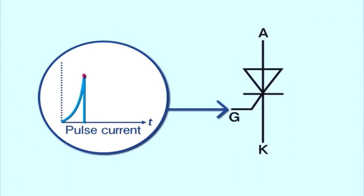When pulse current is passed through the gate, the thyristor turns on. The on state is maintained once the thyristor is turned on. The current flows in the forward direction like a diode during the on state,